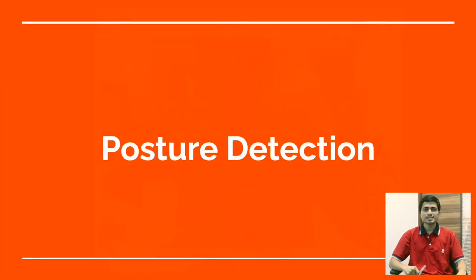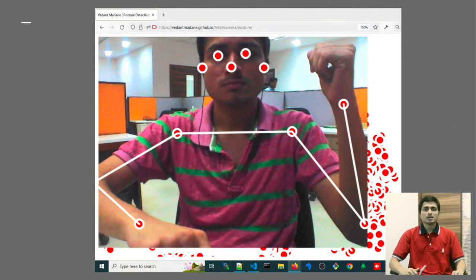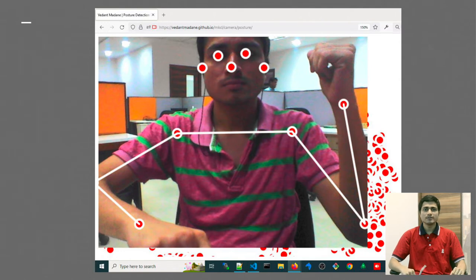Posture Detection. We spend 7-8 hours everyday slouching in our chairs. So, sitting and having the correct posture while doing it is an important component of our general well-being.